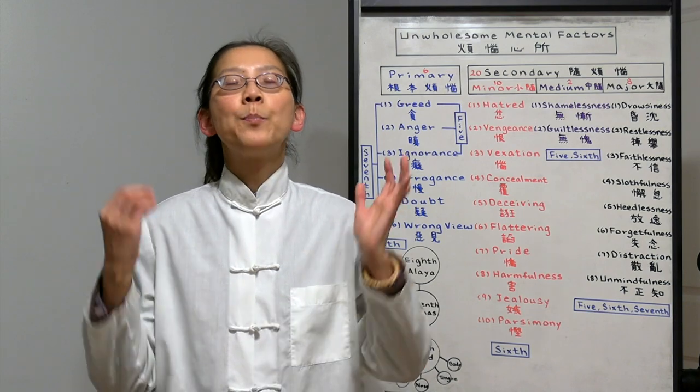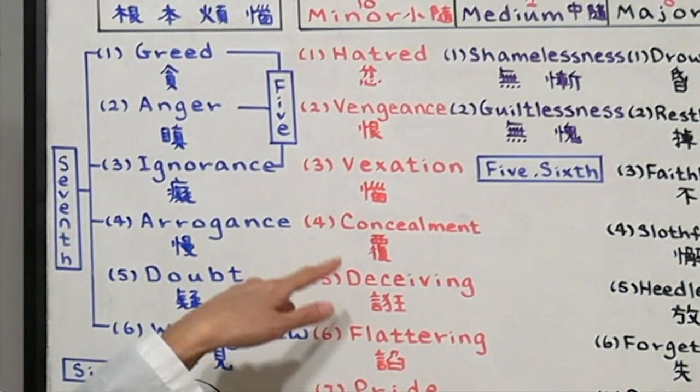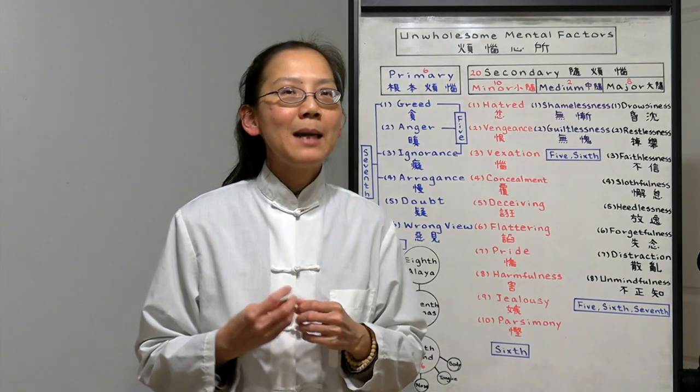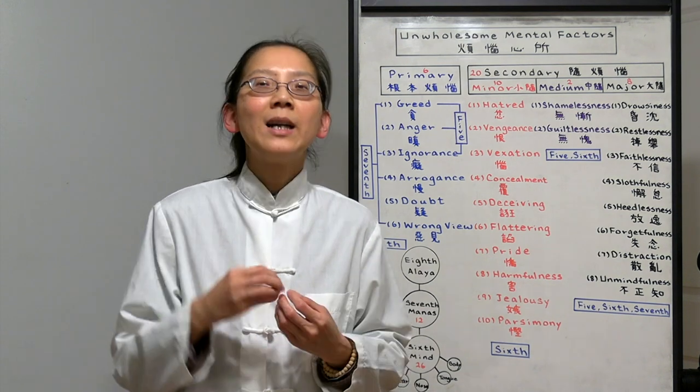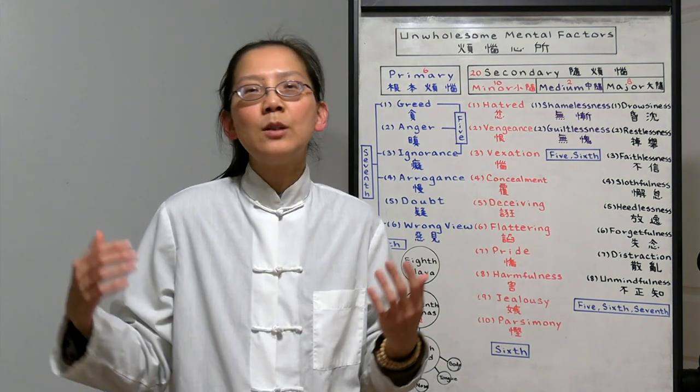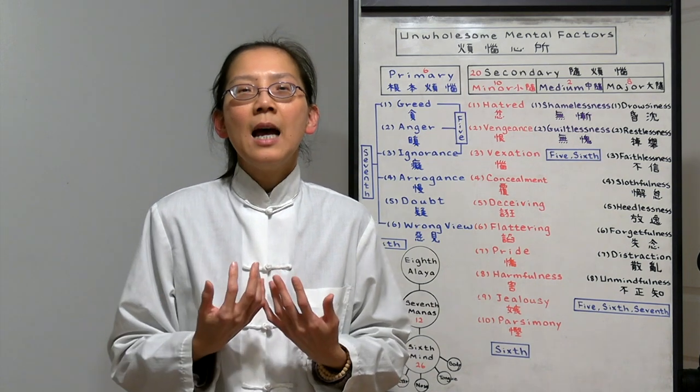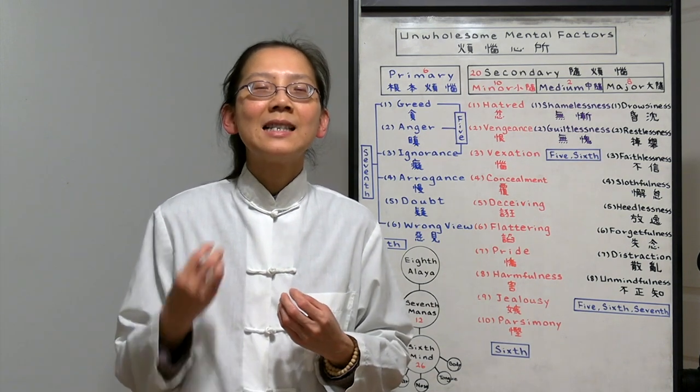Number five is deceiving. We might be falsely kind. We are lying. We are pretending. We are trying to deceive others to get some benefit. That's all because we are not being sincere.